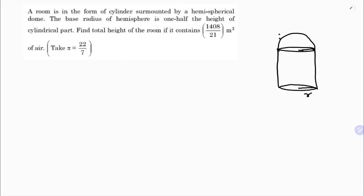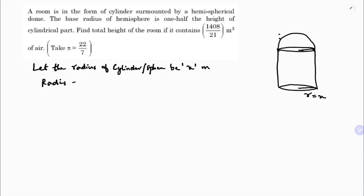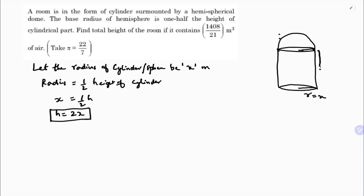Let the radius of the cylinder or hemisphere be x meters, since both share the same radius because the hemisphere is surmounted on the cylinder. The radius is half of the height h of the cylinder, so x equals h/2, which means the height of the cylinder is 2x.